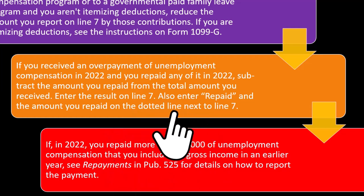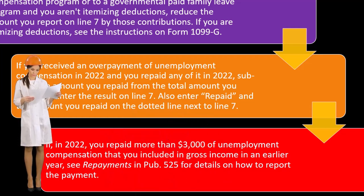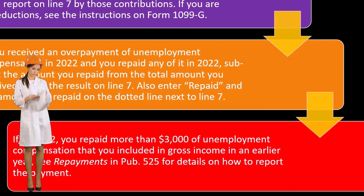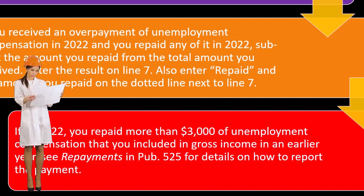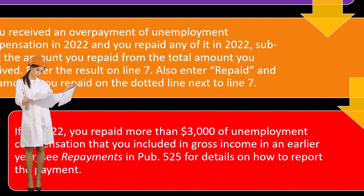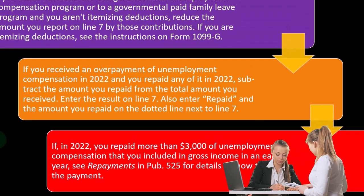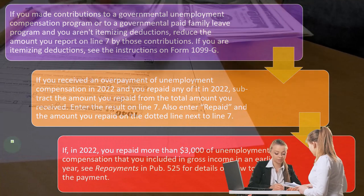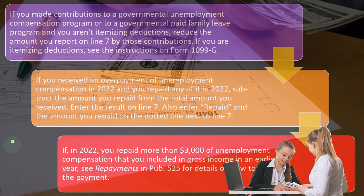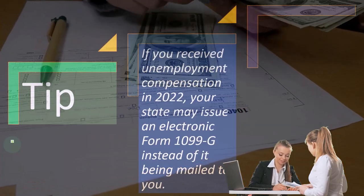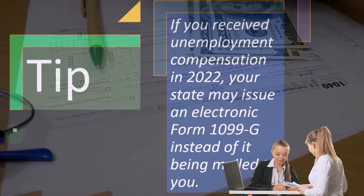If in 2022 you repaid more than three thousand dollars of unemployment compensation that you included in gross income in an earlier year, see 'Repayments' in Publication 525 for details on how to report those payments. The question is whether to amend the prior-year return or adjust in the current year — Publication 525 on the IRS website at IRS.gov covers that situation.